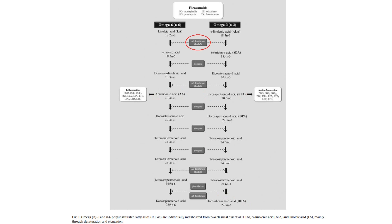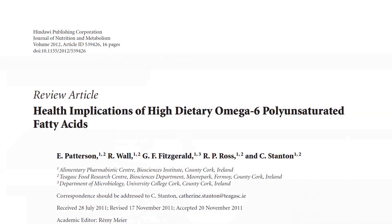The problem is that it is the same rate-limiting enzyme that converts both LA and ALA into their products. If you take in too much LA, ALA becomes crowded out from this enzyme and the vital anti-inflammatory products of ALA cannot be made. This leads to a shift in the balance towards increasing inflammation in the body, above what it would be if we were consuming a more natural, junk-free diet, and inflammation is becoming more and more implicated in a diverse range of chronic diseases.